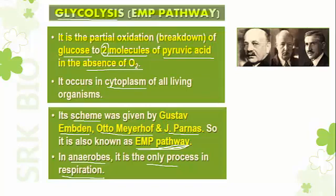Anaerobes are organisms which show anaerobic respiration. For anaerobes, respiration consists only of glycolysis. But in aerobes — organisms which respire through aerobic respiration — the first step is glycolysis, the second step is the Krebs cycle or citric acid cycle.